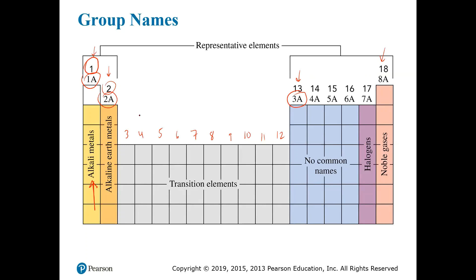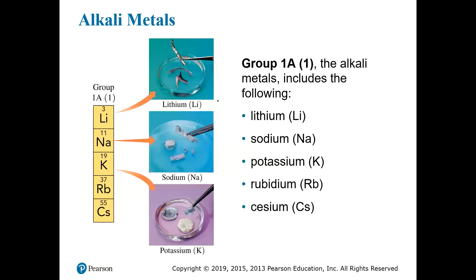So the groups are columns and they have similar properties and so they're also given names. You have the alkali metals, the alkaline earth metals, these middle metals are called the transition metals, etc.